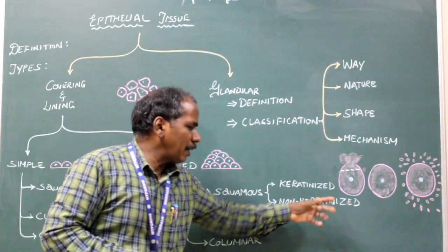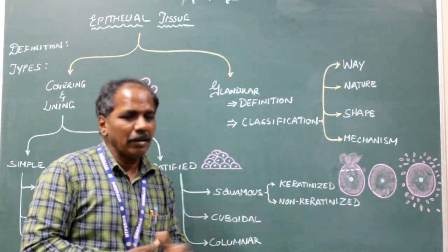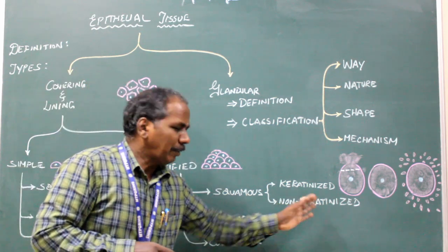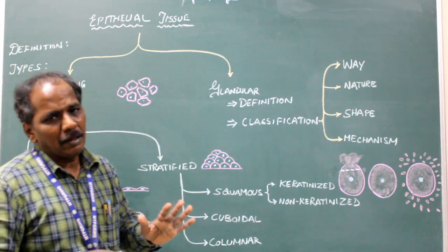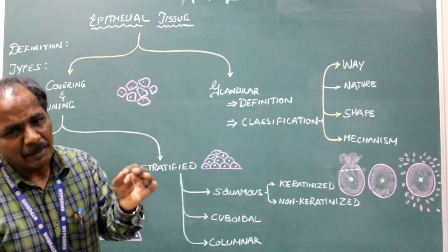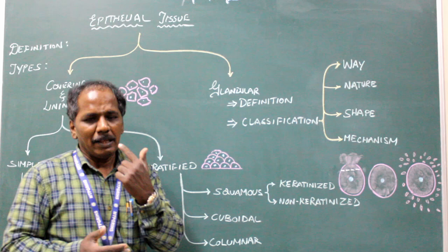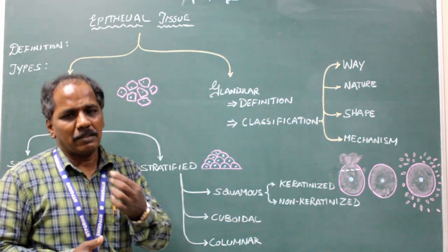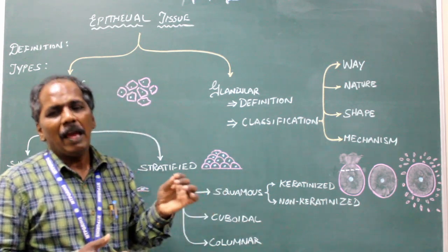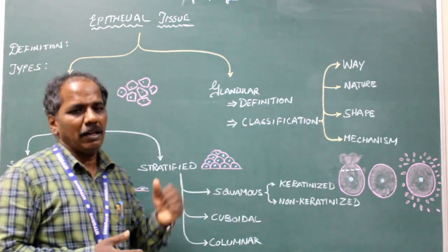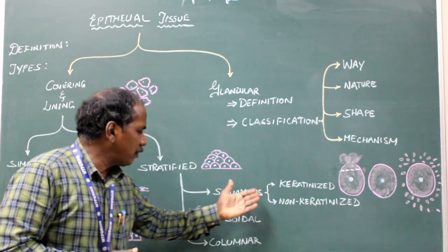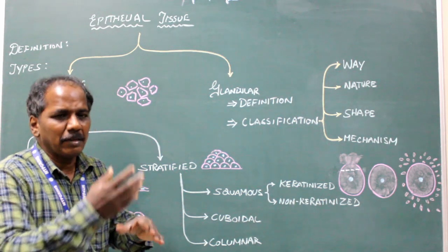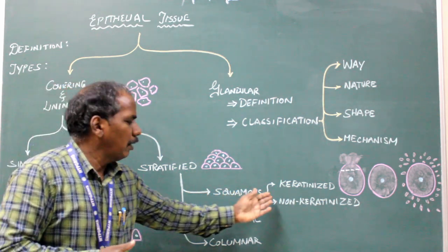Stratified squamous non-keratinized epithelium is non-pigmented, so in dark or light complexion people this epithelium will be the same — there is no differentiation of pigments. Examples: oral cavity, tongue, pharynx, esophagus, anal canal, and vagina. This stratified squamous epithelium is present in rough and tough areas wherever there is damage, as it needs to recover again.